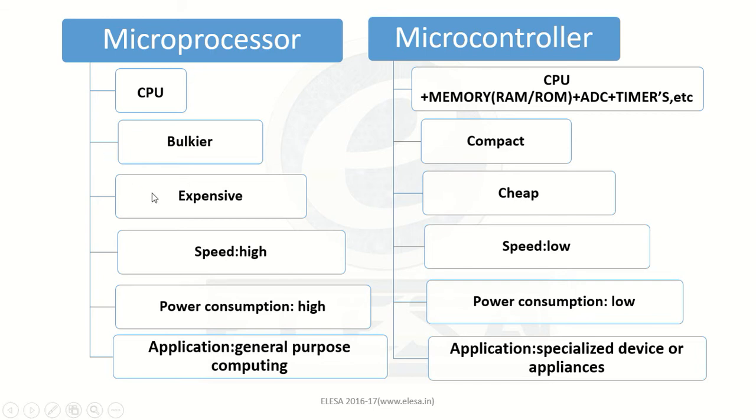A microprocessor is expensive, whereas a microcontroller is cheap. Places where we need to consider space and cost as crucial factors, we can use a microcontroller. Since the microprocessor performs only one specific task of processing, it has high speed, whereas a microcontroller has very low speed compared to the microprocessor.